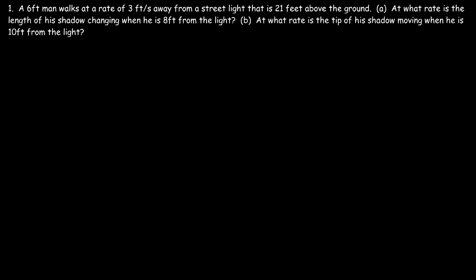In this lesson, we're going to focus on the shadow problem in related rates. So we have a 6-foot man, and he walks at a rate of 3 feet per second away from a streetlight, and this streetlight is 21 feet tall. Now let's draw a picture.